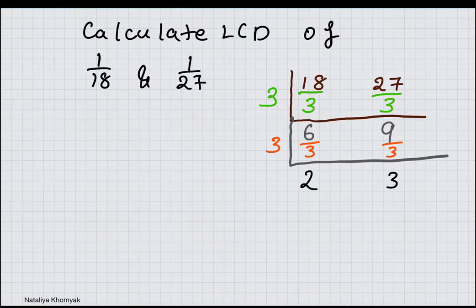Once you have no more numbers except one that will go into whatever you're reducing, you can stop. So with this box method, once you're done reducing, you take all the numbers that are on the outside and you multiply them.